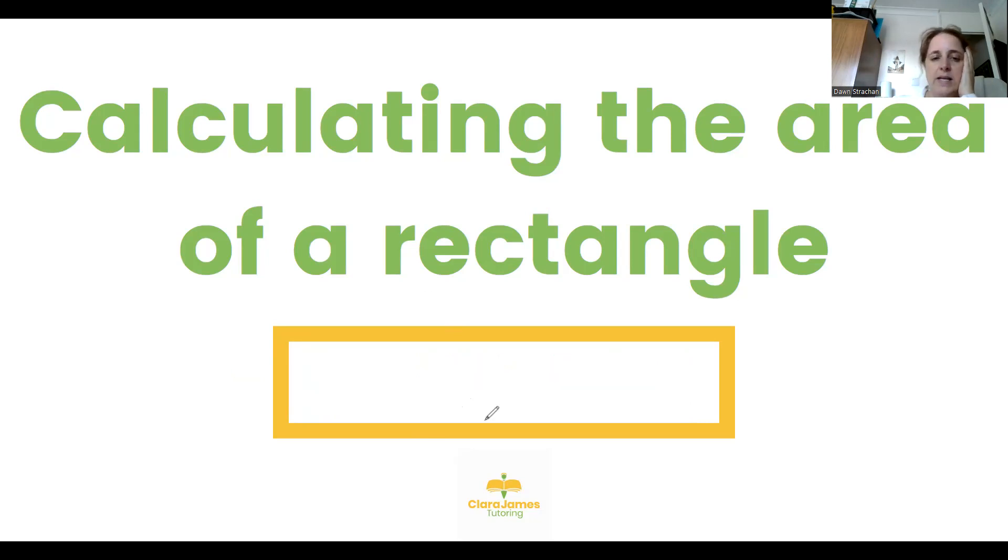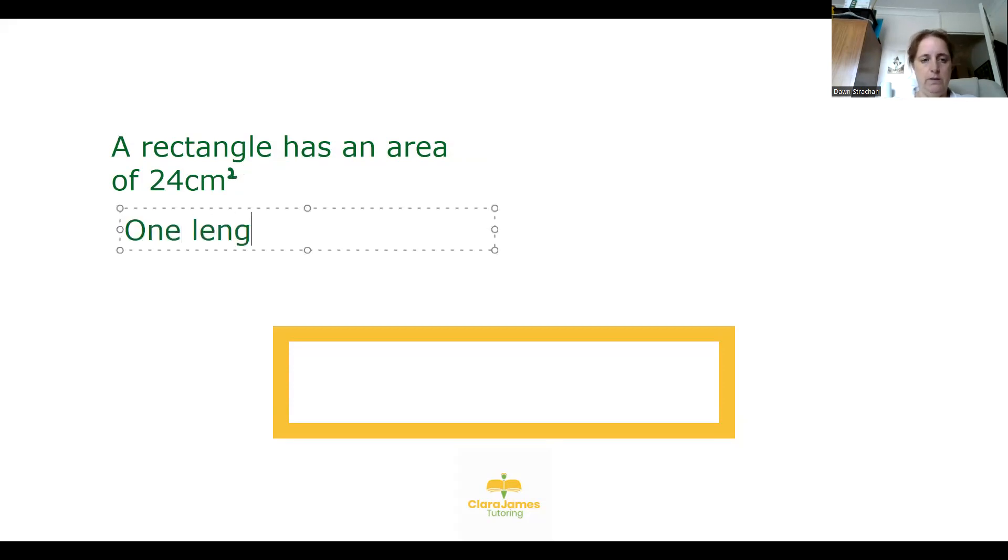So that's how you work out the area of the rectangle. What you may have is a question that says something along the lines of a rectangle has an area of, let's say, 24 centimeters squared. One length is 6 centimeters. Calculate the second length.